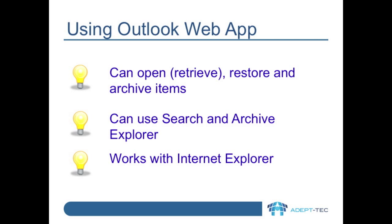What you can do once OWA is installed is you can open, i.e. retrieve items, you can restore items, or you can archive items. You can also use search and archive explorer, much like you can in Outlook. All of this works with Internet Explorer.